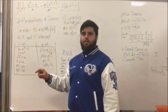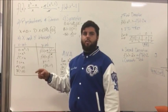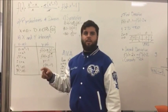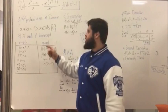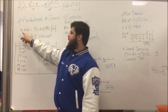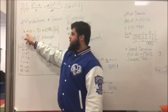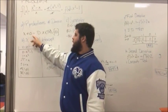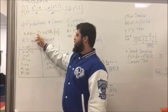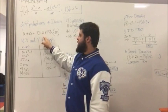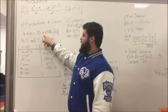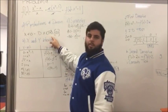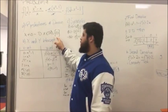We know that a rational function's denominator has to be different from zero. So we know that x is different from zero, and the domain is x belonging to all the real numbers except zero.